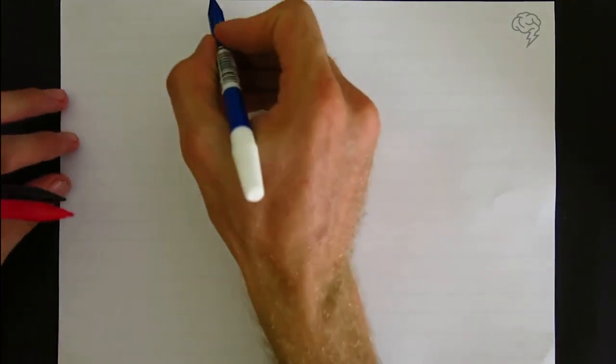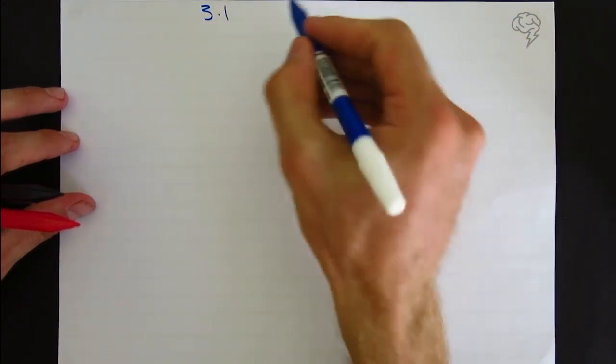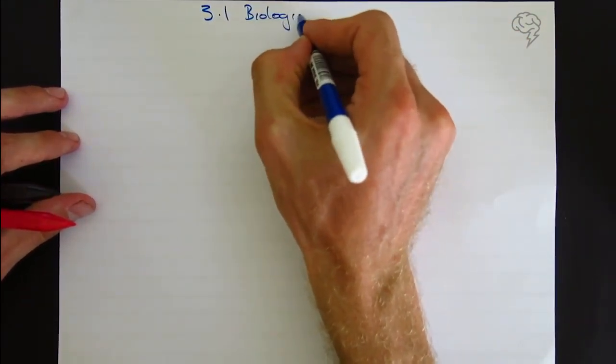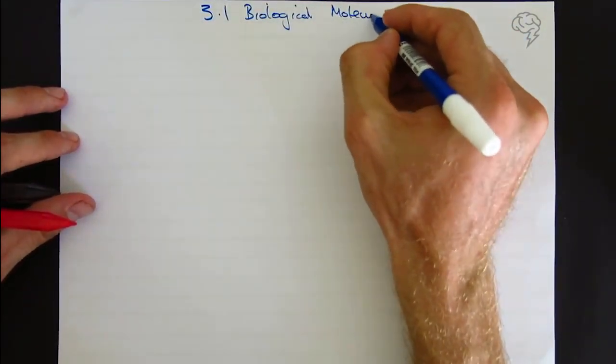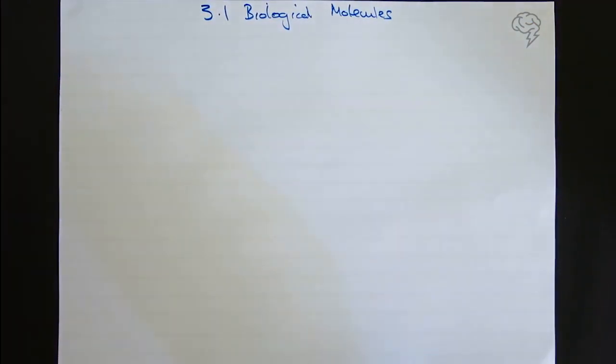We're going to crack on with some of the biological molecules. This is in the specification unit 3.1, the biological molecules. There are four major categories of biological molecules, but before we talk about those we need to get some definitions and key terms clear.